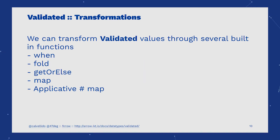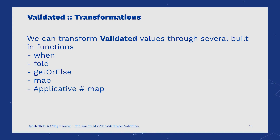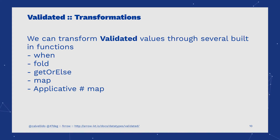We can transform the inner contents of Validated with several built-in functions, such as fold, getOrElse, or map. This might be familiar at this point because we saw the same functions in Option or in Either. This is part of Arrow's unified model of programming — we take all the functional combinators and try to apply them to as many data types as possible, so that all of them share the same API.